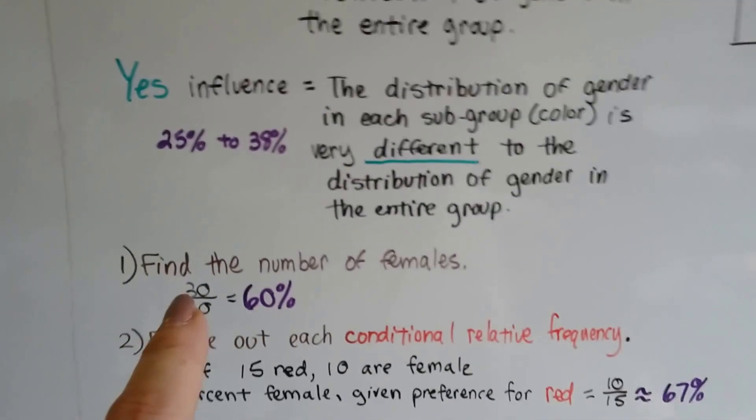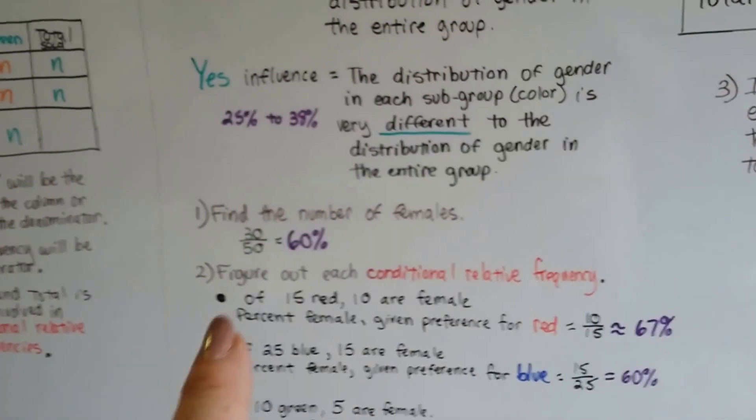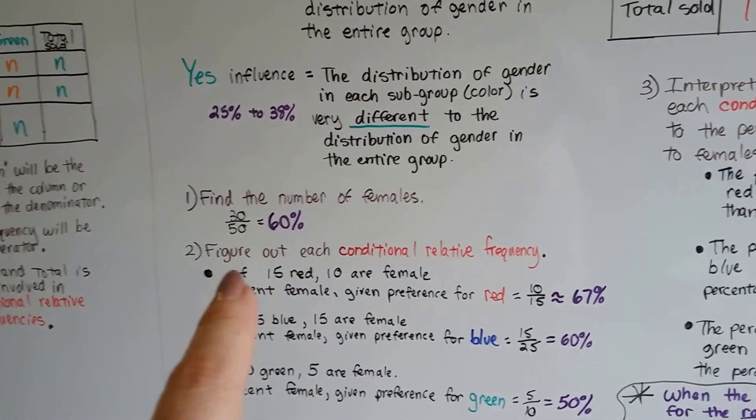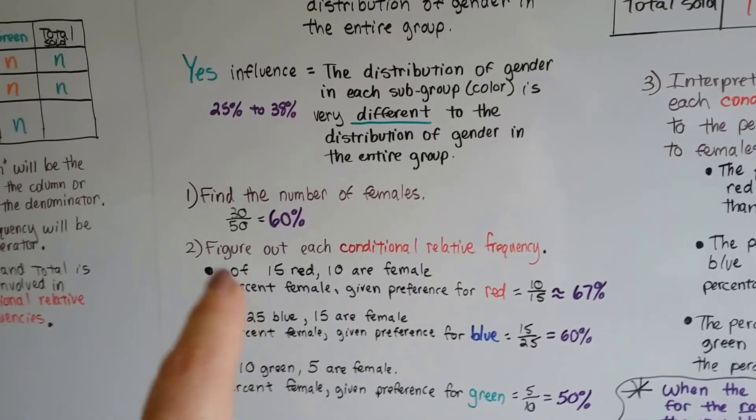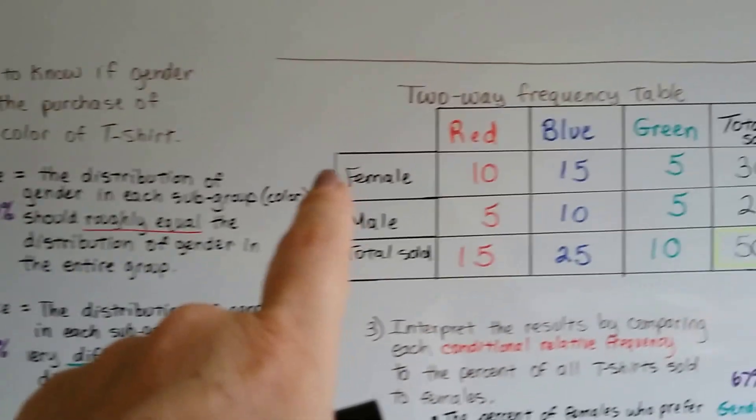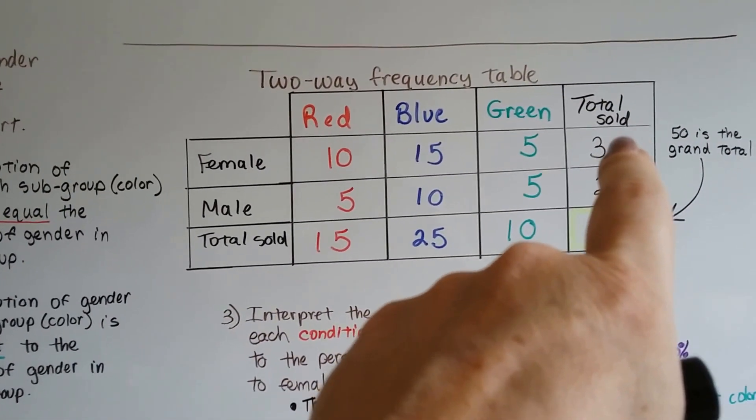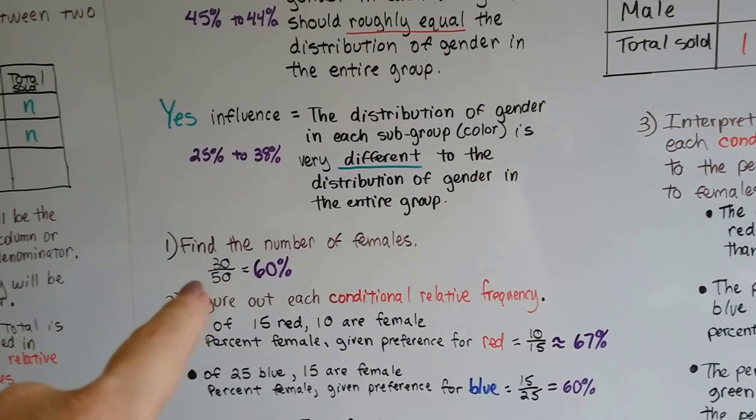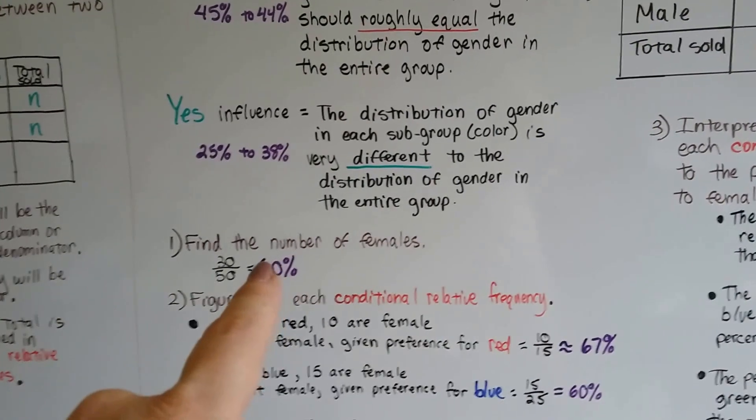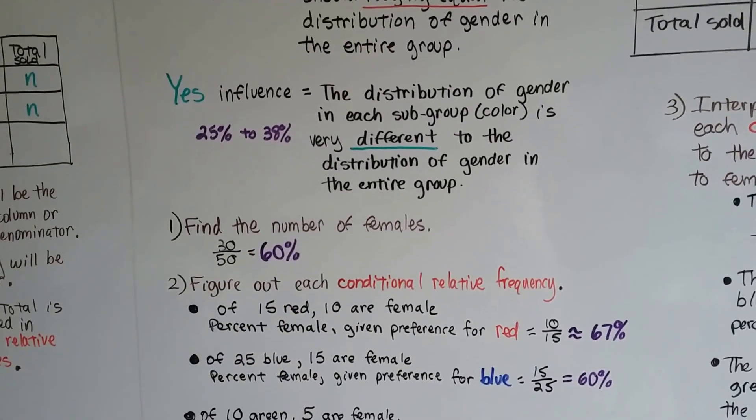So the first thing we're going to do is we want to see if females have anything to do with the purchases of the t-shirts she sold. So the first thing we're going to do is find the number of females. The total number of females is 30, out of 50. And 30 out of 50 is 30 divided by 50, that's 60%. So 60% of her sales went to females.